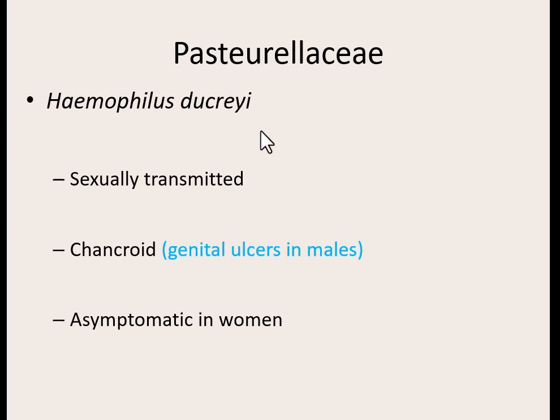The last of our Pasteurellaceae is Haemophilus ducreyi — one of the few we talk about that's a sexually transmitted bacteria. This bacteria causes genital ulcers in males. Females are usually asymptomatic, but why is that bad? You would have no idea that you're a carrier of this bacteria, which means you could be spreading it without having any idea.